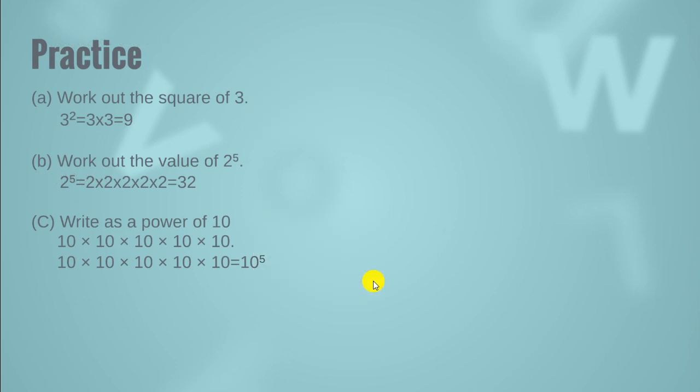Here are some practice questions. Work out the square of 3: the square of 3 means 3 multiplied by 3, or 3 raised to the power 2, which equals 9. In the next question, work out the value of 2 raised to the power 5: that means 2 multiplied by itself 5 times, giving the answer 32. In the next question, write as the power of 10: we have 10 multiplied by itself 5 times, so we write it as 10 raised to the power 5.